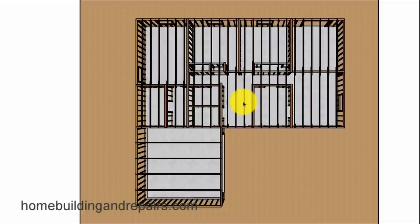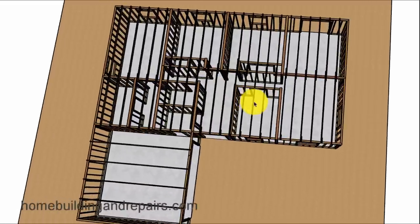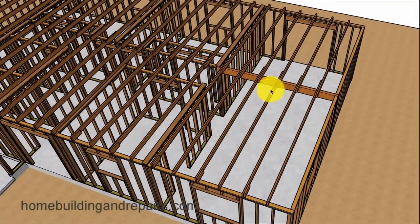Ceiling joists, 24 inches on center again, lapping over the bearing walls and the beam. Here you can see where they come and they lap.